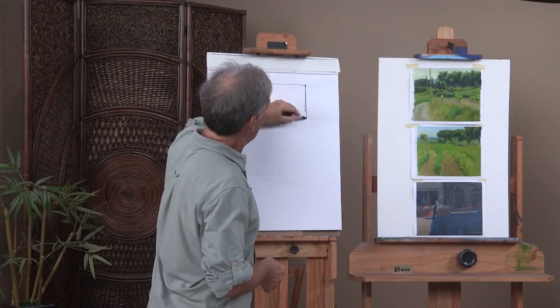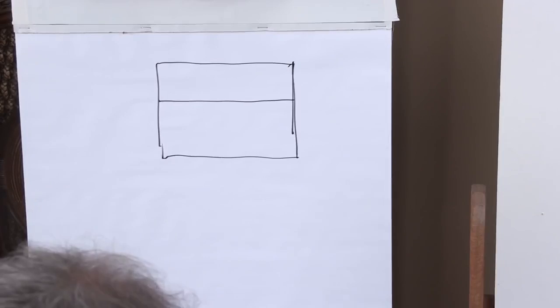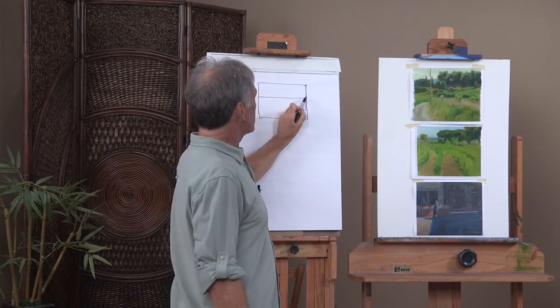With the landscape, the horizontal is a given. Even if there's a bunch of trees in the way and you can't see it, you still know it's there. You're standing on the earth, gravity's holding you down, you know the horizontal is there.